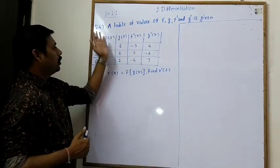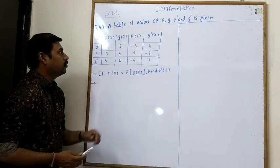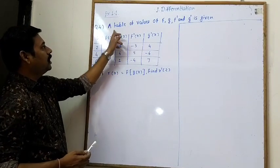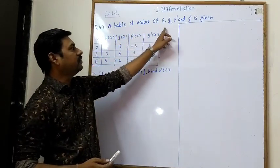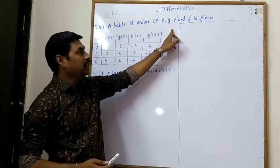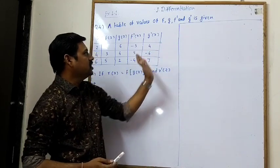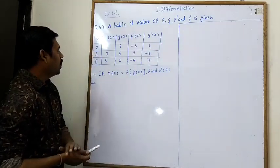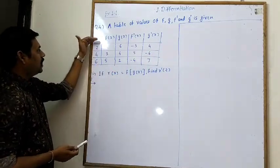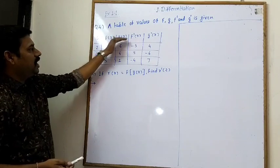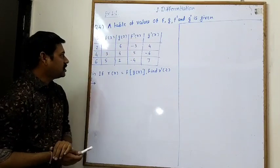Question number 4. A table of the values of f, g, f' and g' is given. We are given a table of f, g, f' and g' for the x values.